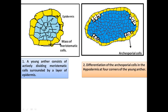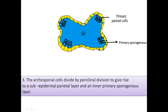The archesporial cell then undergoes periclinal division — a division parallel to the surface. As a result, at the four corners we get two sets of cells: one layer towards the epidermis (sub-epidermal), called primary parietal cells, and another layer towards the inside of the anther, called primary sporogenous cells. So archesporial cells divide by periclinal division to give rise to sub-epidermal primary parietal cells and inner primary sporogenous cells.